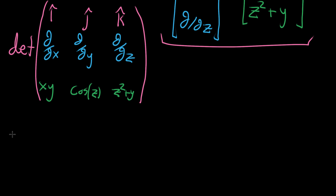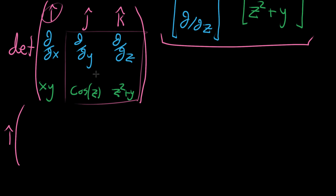This determinant is broken into three parts. For the first part, we take i and multiply it by the sub-determinant. We compute the partial derivative with respect to y of z squared plus y. Since z looks like a constant with respect to y, z squared is constant, so that partial derivative is just 1. Then we subtract the partial derivative with respect to z of cosine of z, which is negative sine of z. So the i component is 1 minus negative sine z.